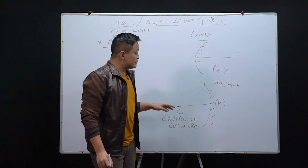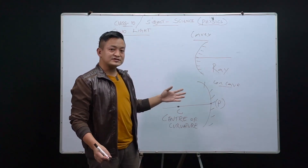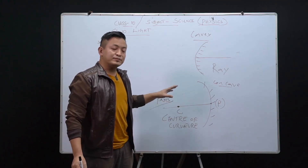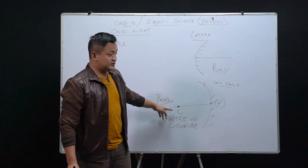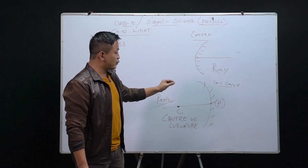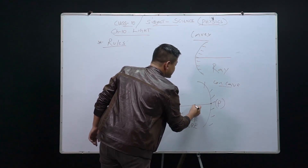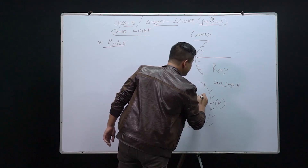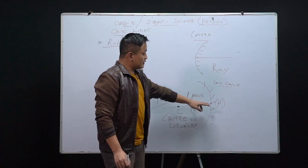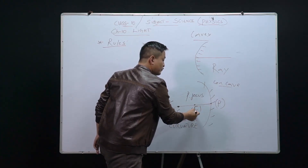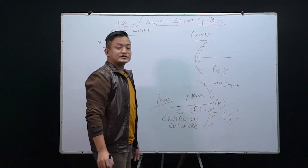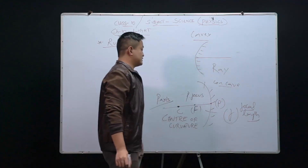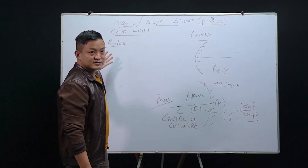The line joining the pole P and the center of curvature C is known as the principal axis. Between the pole and the center of curvature there is a point called the principal focus, represented by the block letter F. The distance between the pole and the principal focus is denoted by small f and is known as the focal length.